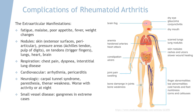Here we are at the extra-articular manifestations of rheumatoid arthritis. This slide does not mean that all patients with rheumatoid arthritis have all these symptoms — this is just some of the symptoms that may be seen with this disease. These manifestations do not have to be present for the patient to be diagnosed with rheumatoid arthritis. Some extra-articular manifestations include systemic B symptoms like fatigue, malaise, appetite changes, fever, and weight changes.